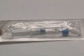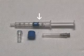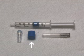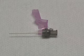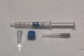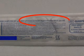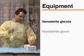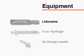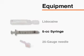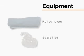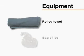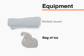Standard arterial blood gas sampling kits are readily available and contain a syringe, a small 23 to 25 gauge needle either with a rubber stopper to remove the needle from the syringe or with an attached safety cap, and a syringe cap containing dry lithium heparin or sodium heparin. The concentration of heparin varies depending on the manufacturer. You will also need alcohol swabs, sterile gauze, tape, non-sterile gloves and gown, 1% lidocaine without epinephrine, a 5cc syringe with a 25 gauge needle, a small rolled towel to place under the wrist, and a bag of ice in which to transport the sample to the lab if required.